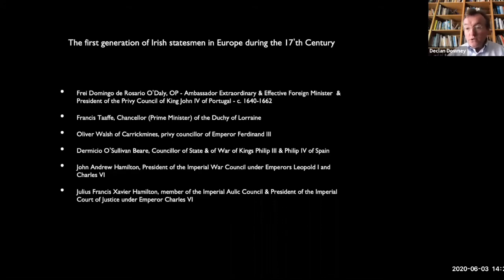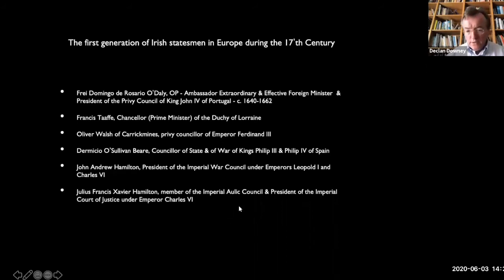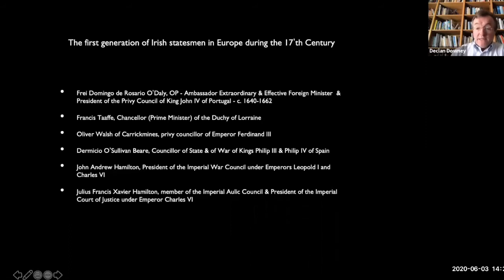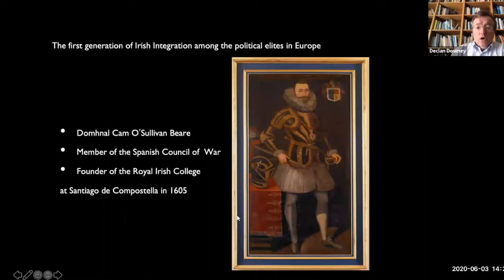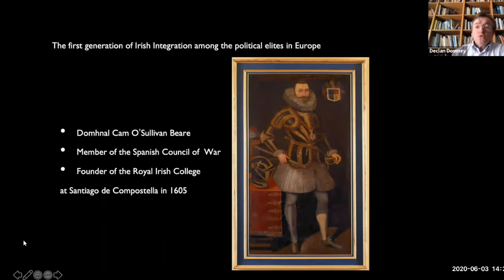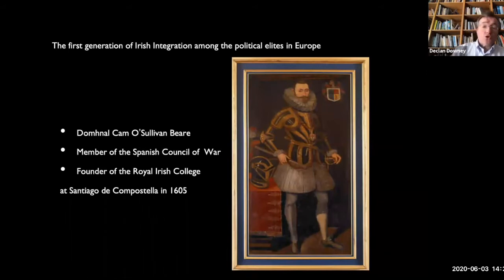Francis Taff was Chancellor, later Prime Minister of the Duchy of Lorraine. Oliver Walsh of Carrickmines in County Dublin — commander of that cavalry regiment — was Privy Councillor of Emperor Ferdinand III in the Holy Roman Empire. Dermot O'Sullivan Beare was Councillor of State and War to Kings Philip III and Philip IV of Spain. Julius Francis Xavier Hamilton was member of the Imperial Aulic Council — the highest court in the Holy Roman Empire — and President of the Imperial Courts of Justice under Emperor Charles VI. Donal Camog O'Sullivan Beare, from near Bantry in southwest Cork, was a member of the Spanish Council of War and founder of the Royal Irish College at Santiago de Compostela in Spain.